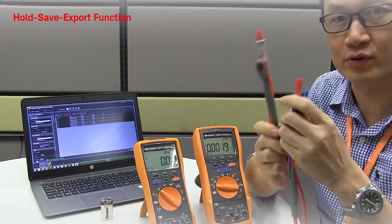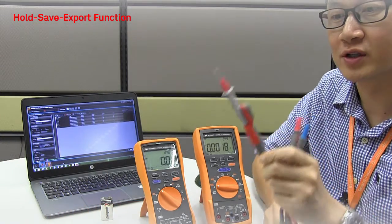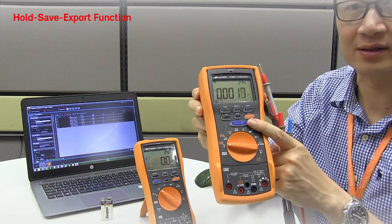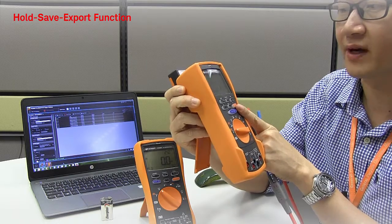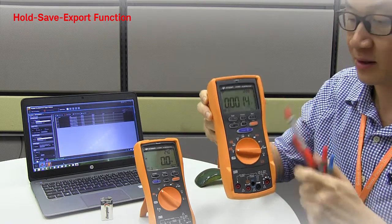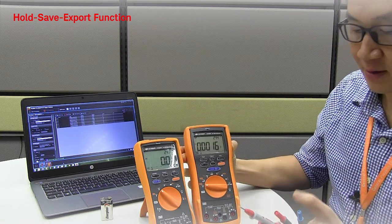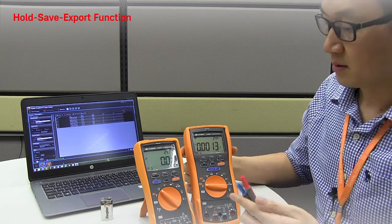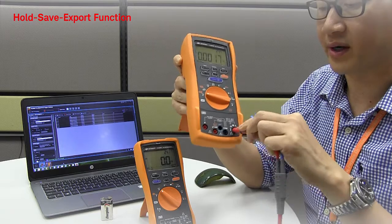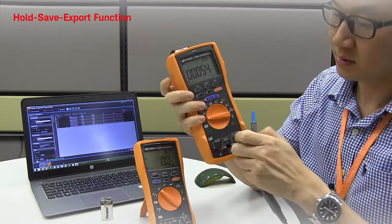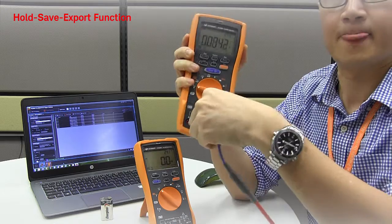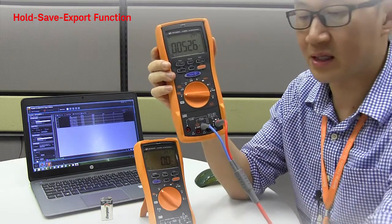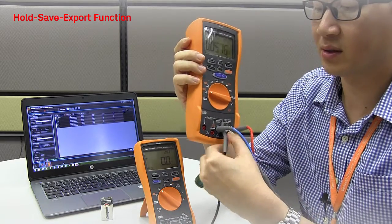By using this remote switch probe, you can actually emulate the functions of the blue buttons over here. It's only for the U1281A and U1282A. Let me do a quick demo. Now connect the remote switch probe to the correct terminals. It's indicated by color: blue, red, and you would like to connect another to the COM.